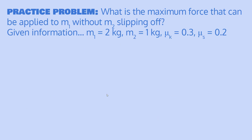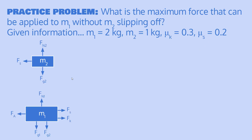Now let's do a practice problem. The most common version asks: what is the maximum force that can be applied to the bottom block (mass 1) without the top block (mass 2) slipping off? In this problem we're given both masses, the coefficient of kinetic friction between mass 1 and the table, and the coefficient of static friction between the two blocks. We assume this is the maximum coefficient of static friction right before slipping occurs.